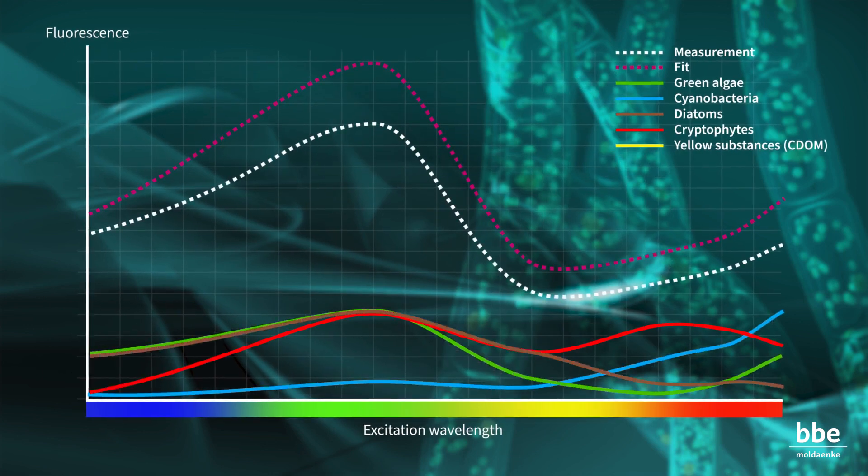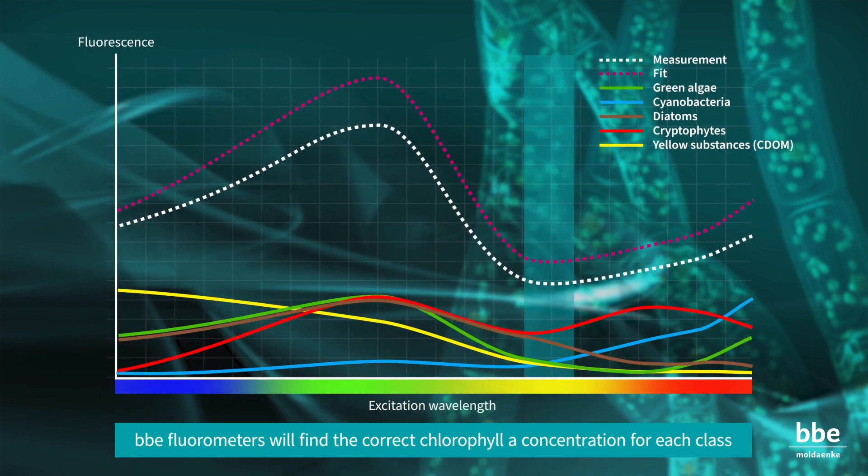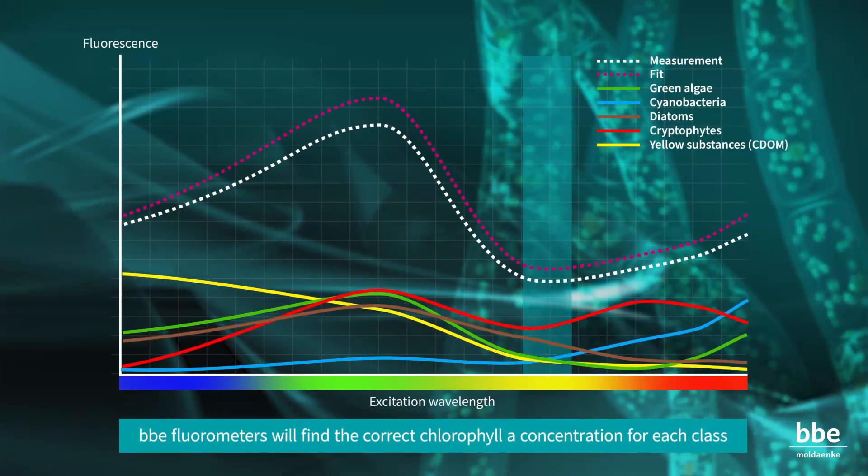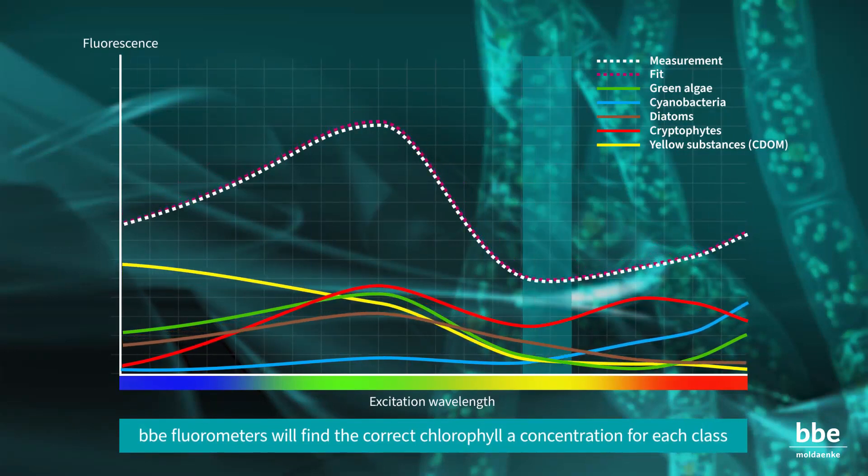Using the norm spectra of all classes and the yellow substances, the BBE fluorometers will find the correct chlorophyll A concentration for each class.